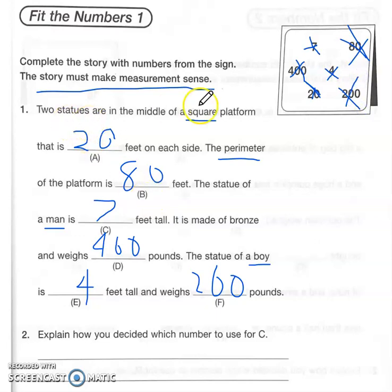It makes measurement sense. Two statues are in the middle of a square platform that is 20 feet on each side, the perimeter of the platform is 80 feet, the statue of a man is seven feet tall, it's made of bronze and weighs 400 pounds, the statue of a boy is four feet tall and weighs 200 pounds. That sounds good to me. So again, you're going to use the numbers on the sign, fill them in so that it makes the most sense. Good luck!